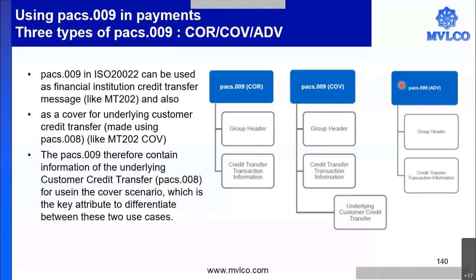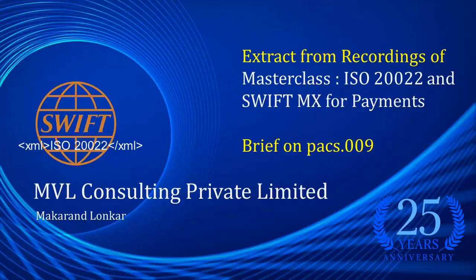The third type is PAX009 advice. It will have a group header and credit transfer transaction information. The advice is used like we have the PAX008 being used in the cover mechanism in respect of a customer-related payment. There are going to be three PAX009 types: the core, the cover, and the advice.